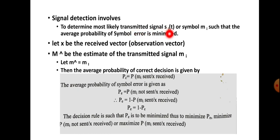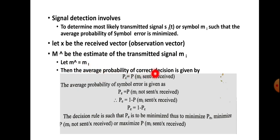We want to determine the most likely transmitted signal Si, or equivalently message Mi, such that the average probability of symbol error is minimized. Let x be the received vector or observation vector, and M-hat be the estimate of the transmitted message Mi. The average probability of correct decision is given by P(Mi sent | X received), meaning that M-hat equals Mi.